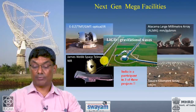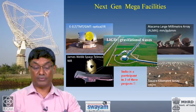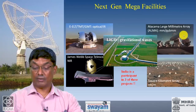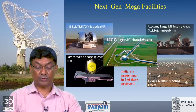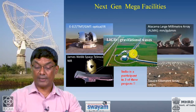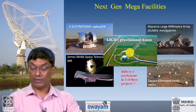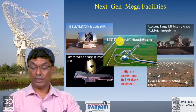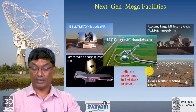The SKA will sit alongside all next-generation mega facilities: the optical TMT and GMT, ALMA, the James Webb Space Telescope, and gravitational wave detectors like LIGO. It is important and heartening to note that India is participating in at least three of these large international projects: optical, LIGO, and radio.